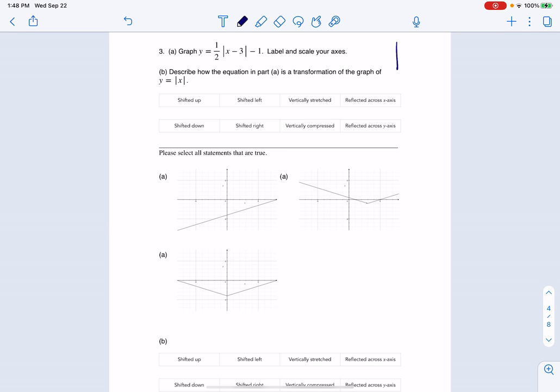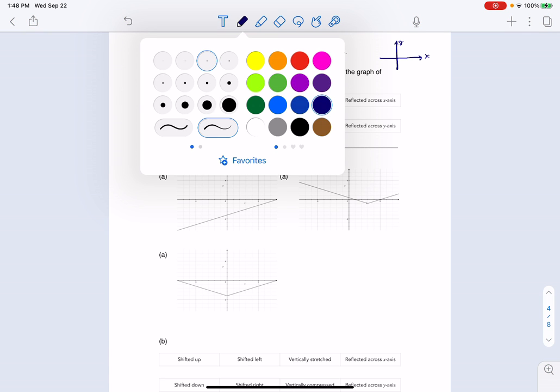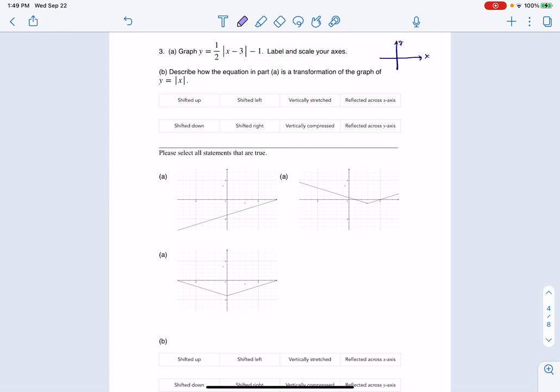Keep in mind, your original absolute value function looks like a V. Actually, I'll use a different color just so you can see it. Let's use this one so it was pretty. It looks like a V, like this. And its vertex is always at 0, 0. But we're going to move it.